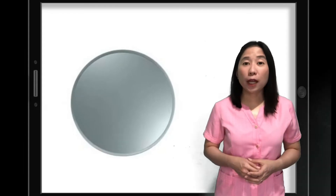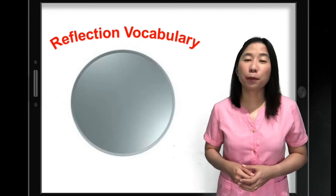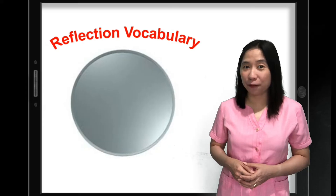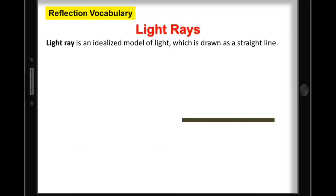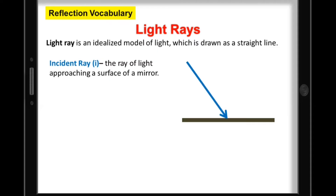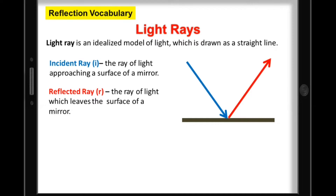To learn more about reflection of light by mirrors, here are some important terms you need to understand first. A light ray is an idealized model of light which is drawn as a straight line. There are two important rays. We have the Incident Ray, which is the ray of light approaching the surface of a mirror. Next, we have the Reflected Ray, which is the ray of light that leaves the surface of a mirror.